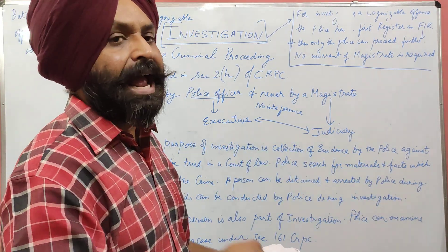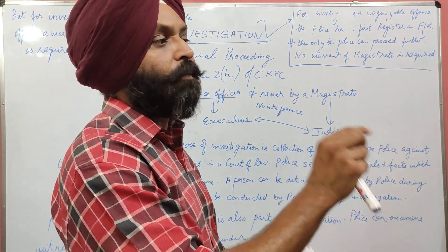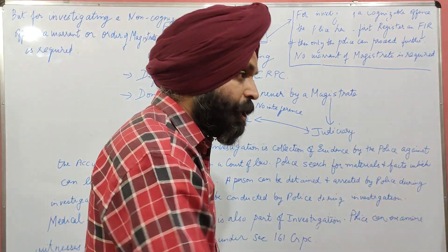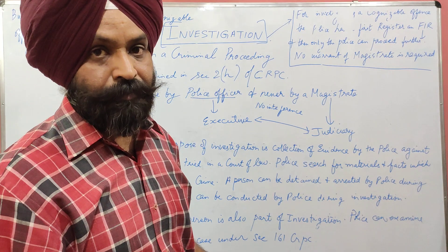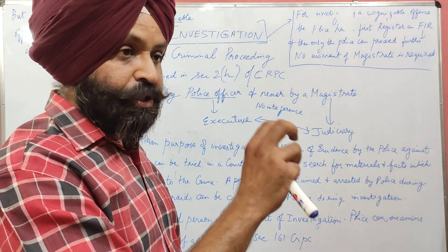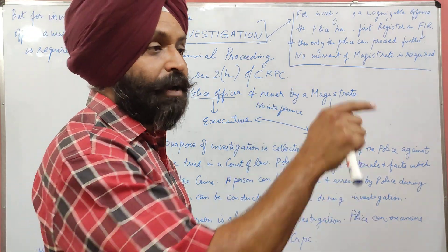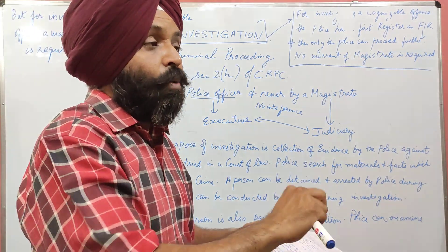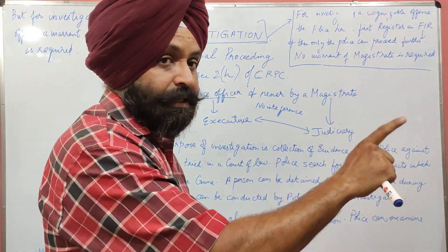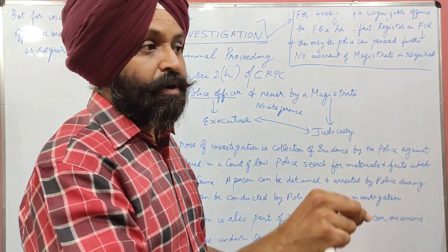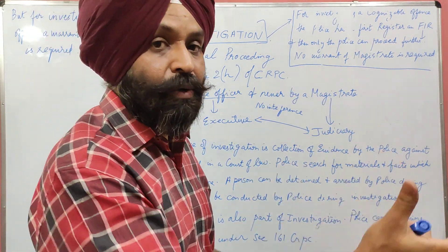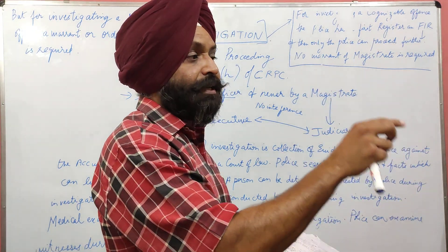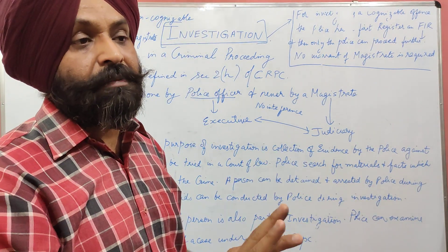The court will never interfere in any investigation. Investigation is the job of the police and the judiciary does not interfere in the process of investigation. Under Section 156, clause (3), the magistrate may direct the police officer to investigate a case — but how to investigate, where to go, and what method to use is not ordered by the judge. It is only the police officer who decides how, when, and where to investigate.